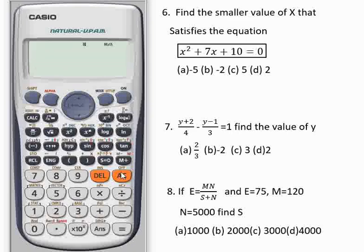Then question number 8 says, if E = MN/(x+N) and E=75, M=120, N=5000, find S. So we have E to be 75. It's equal to. You are not going to use this equal to, you are going to use this one. And we have fraction. M is 120 multiplied by n, which is 5000. Forward button. You have x plus n.